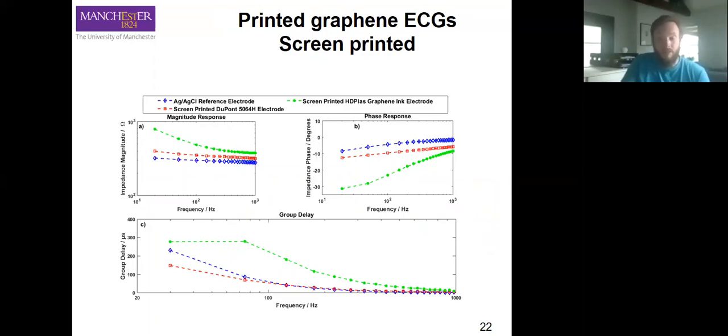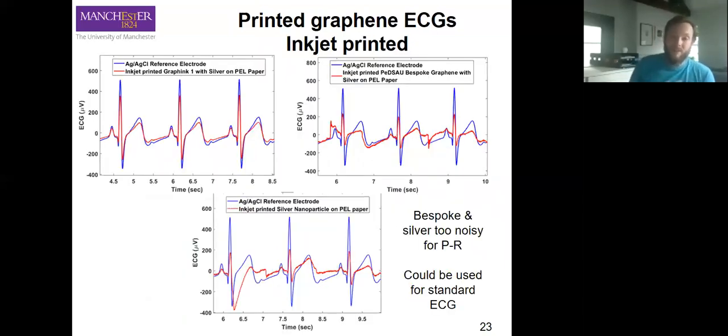When we compare these with inkjet printed, we start to see change. On our top left, this is Graphene One, which is a commercial graphene for an inkjet printer, and that's made through a microfluidics process. This gives us slightly diminished signal over the screen printed we saw earlier, but we do see very high signal quality.